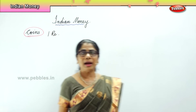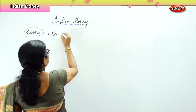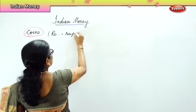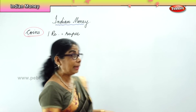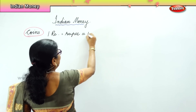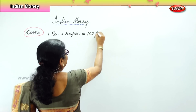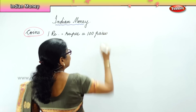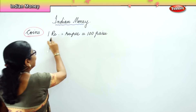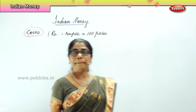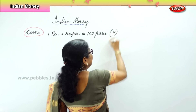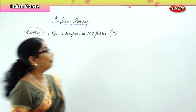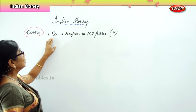You write rupee as RE short form. 1 rupee - that's called rupee. In 1 rupee, you have 100 paise. 1 rupee is equal to 100 paise. We write rupee as RE and paise we write as P. So the first Indian coin is 1 rupee.